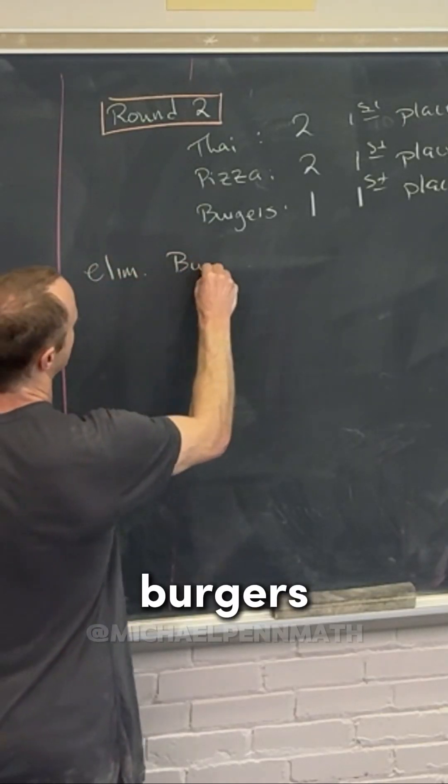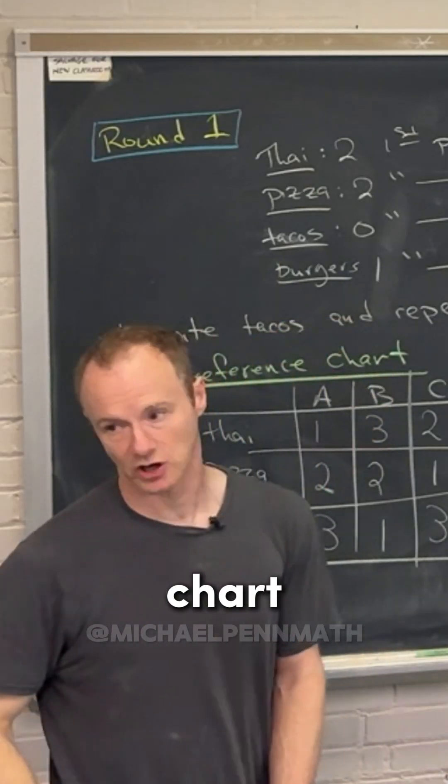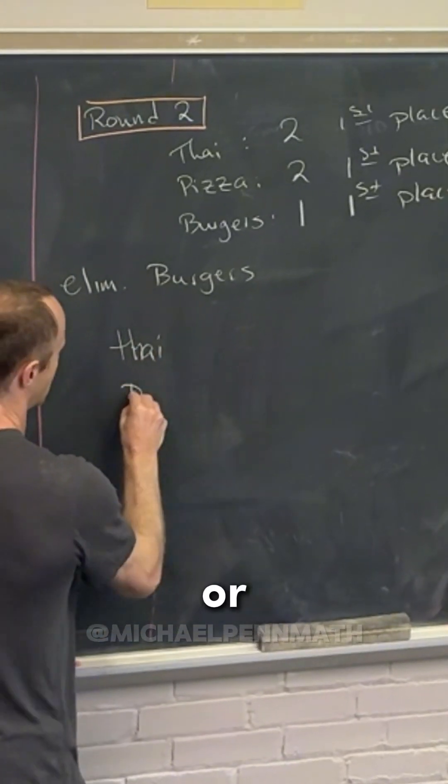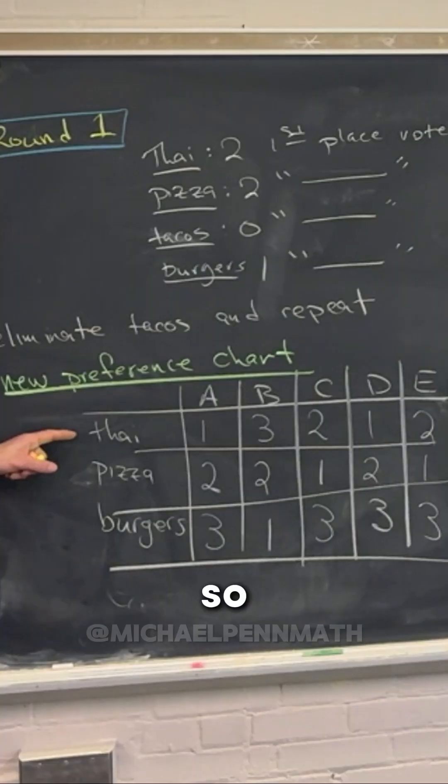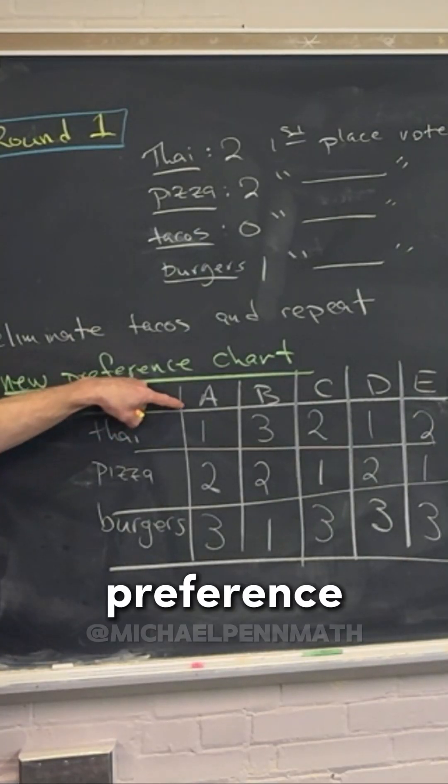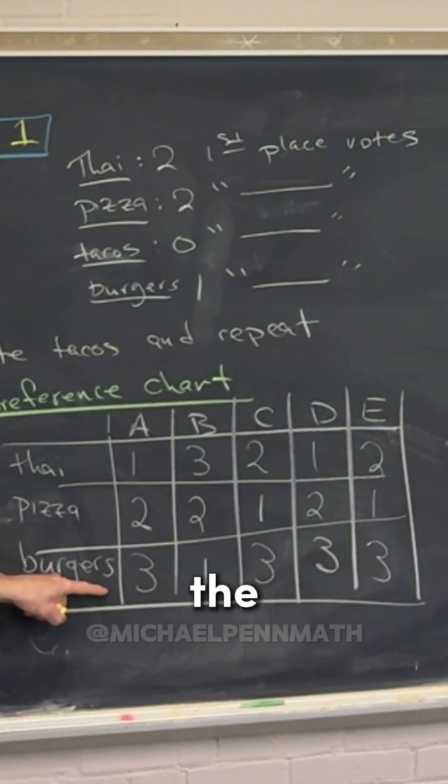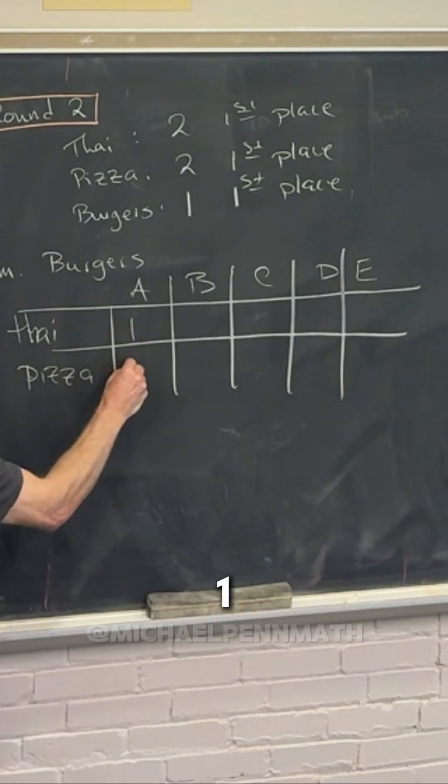So eliminate burgers and then make a new preference chart again. But this will be the last preference chart. We got Thai or pizza, and then people A, B, C, D, and E. So let's see. What's person A's preference? Thai. Yeah, we eliminate burgers, so notice the rankings don't change, right? So one, two.